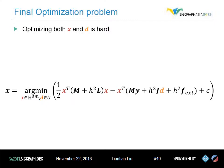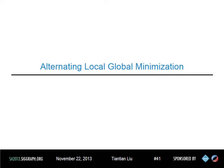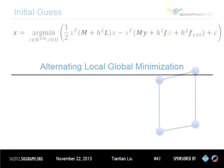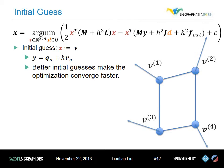We substitute our internal energy into our objective function and arrive at our final optimization form. The minimum of this problem is an exact solution of the implicit Euler time step. But the state vector x and the auxiliary d are both unknown. Optimizing both of them at the same time is intractable. However, fixing one of them makes solving the other one easy. Therefore, we use an alternating local-global strategy — also known as block coordinate descent — to solve this minimization problem.